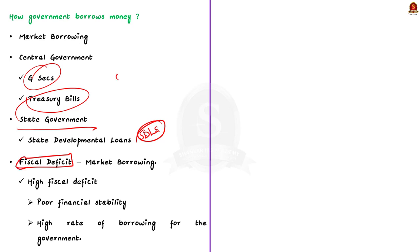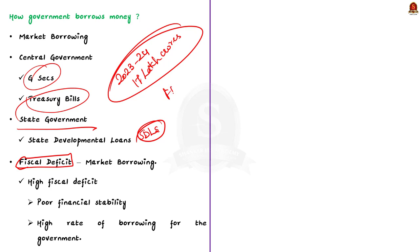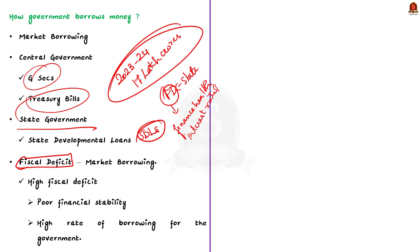According to the 2023-24 union budget, the union government is expected to borrow around 17 lakh crores from the market. Each state government will have a fiscal deficit and will resort to market borrowings to address it. The fiscal deficit is a very important metric because it shows the health of government finances. If it is very high, the government is borrowing heavily to fuel expenditure, and the interest rate on borrowings also increases. Governments therefore try to reduce fiscal deficit by reducing spending, increasing revenue, or increasing GDP.